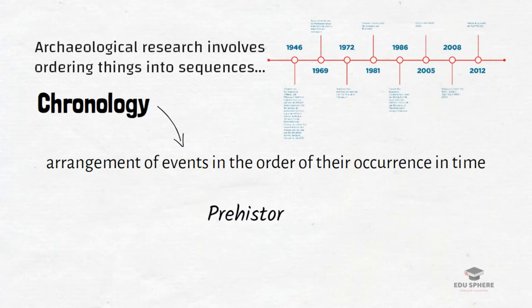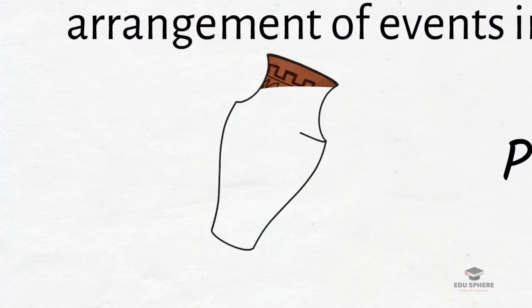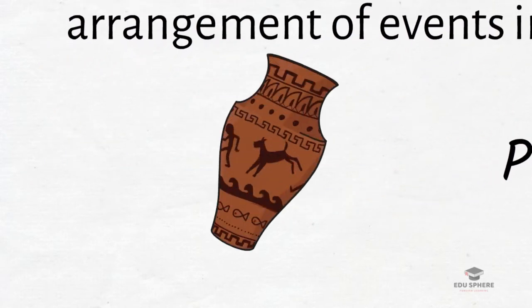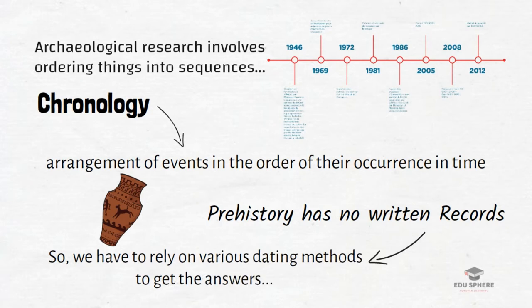Prehistory denotes a period for which we do not have any written records. It deals with a long span of time. Therefore, whenever any kind of prehistoric remain is recovered, a very common question that comes into mind is: how old is it — whether it belongs to the Paleolithic period or it belongs to a comparatively recent Chalcolithic period. To get the answers, we have to rely on various dating methods that are available to the prehistorians.